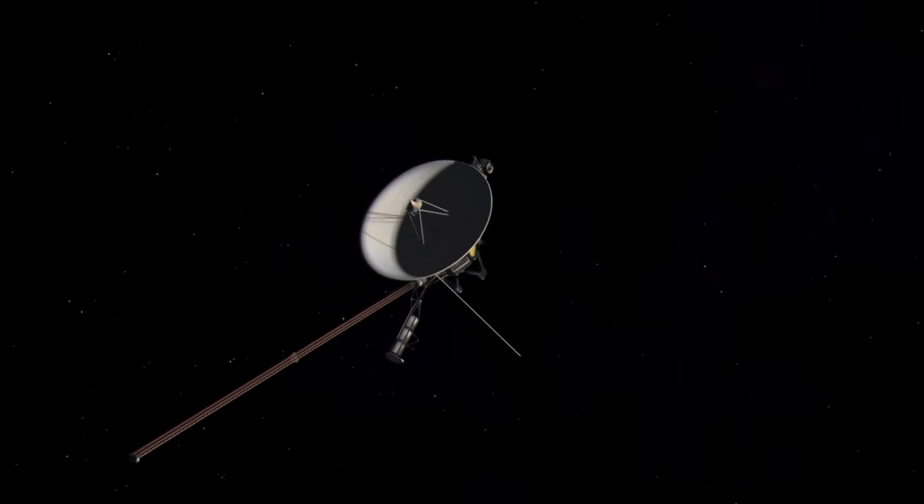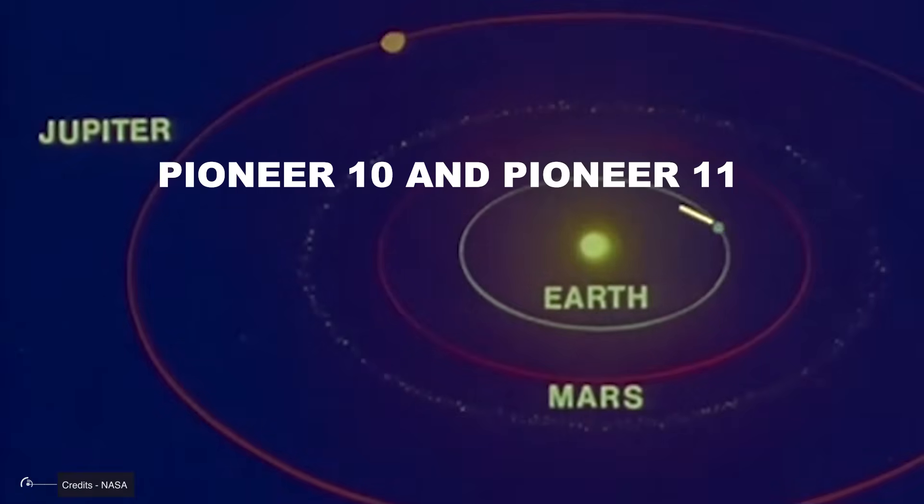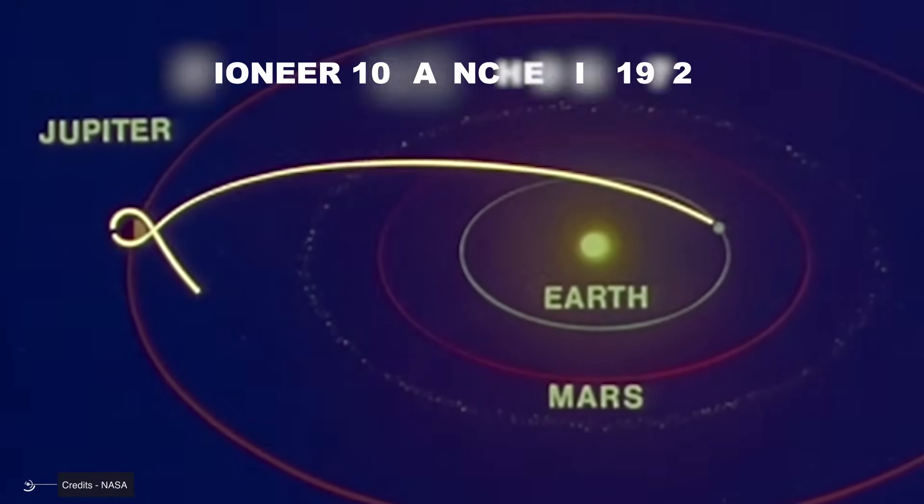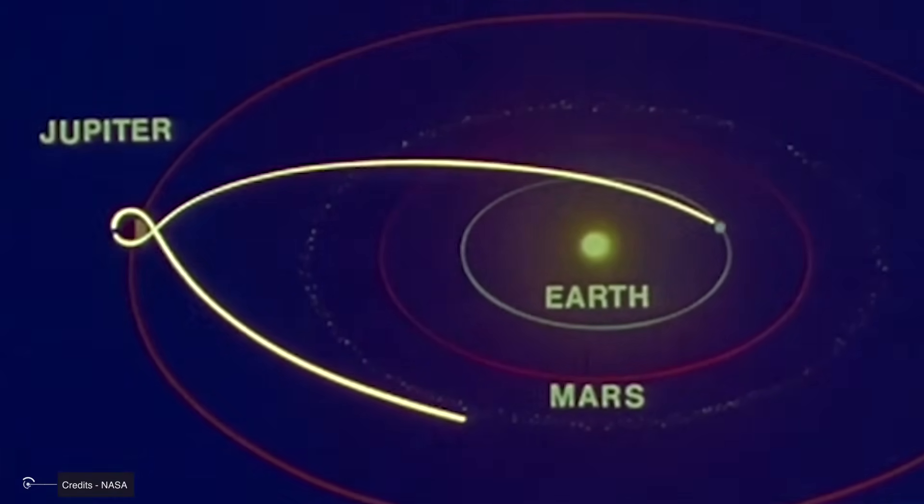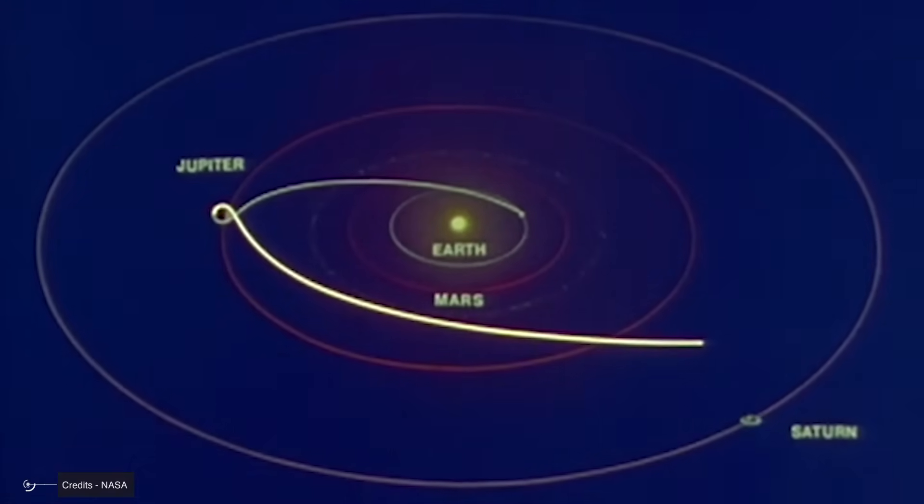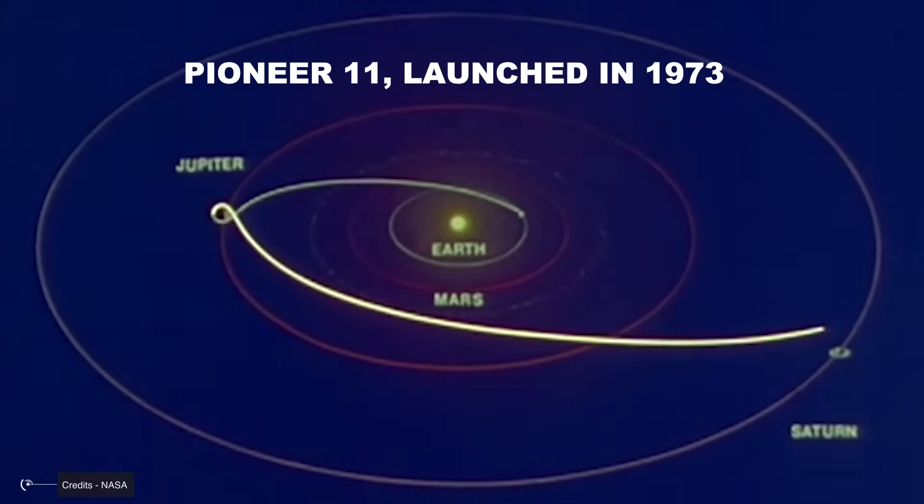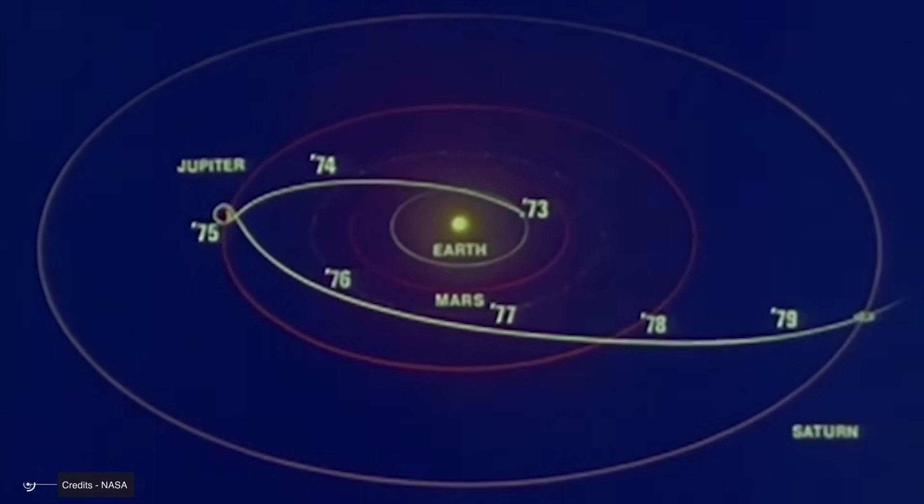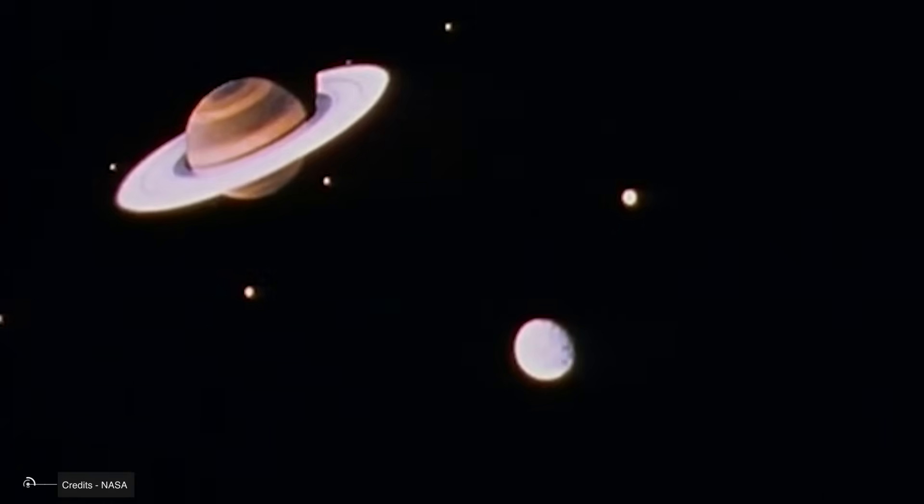Before the Voyagers, NASA had already launched the Pioneer 10 and Pioneer 11 probes. Pioneer 10 was launched in 1972 and became the first spacecraft to cross the asteroid belt and fly by Jupiter in 1973. Pioneer 11, launched in 1973, not only visited Jupiter but also became the first probe to reach Saturn in 1979, four months before Voyager 1.